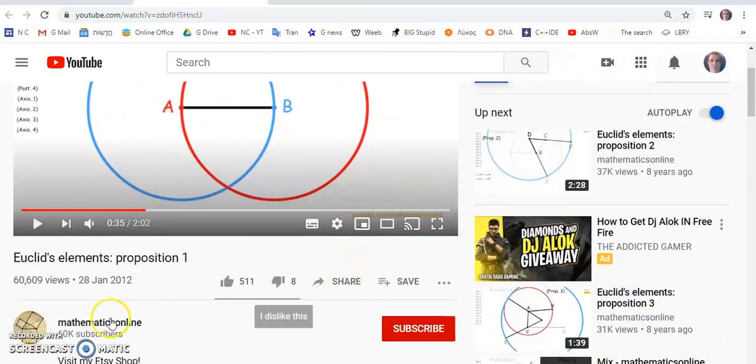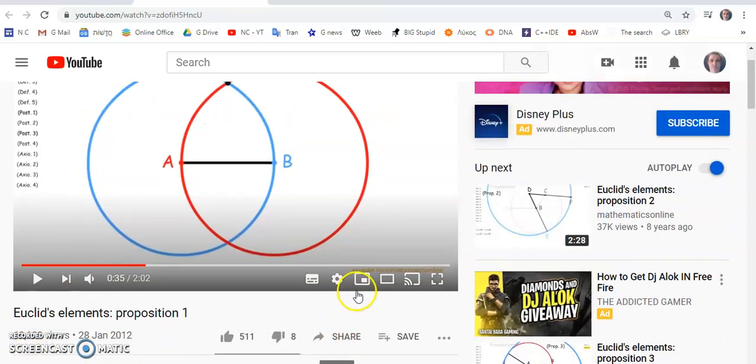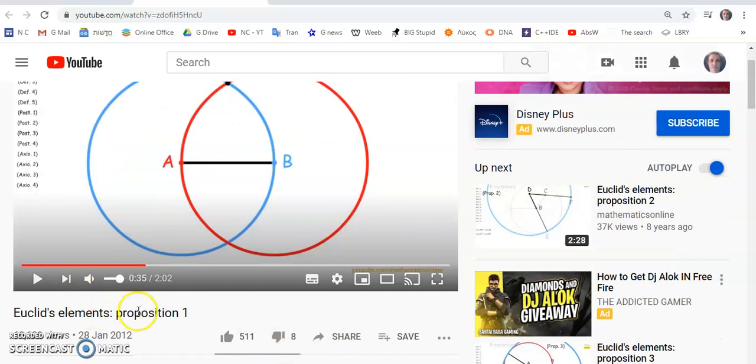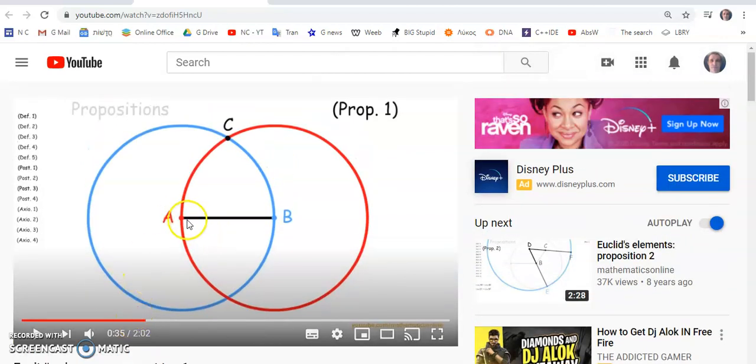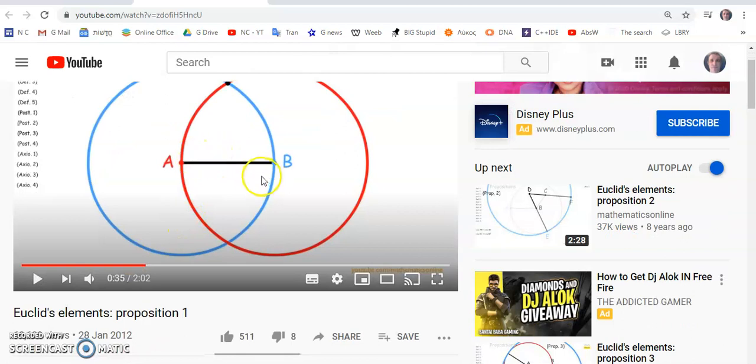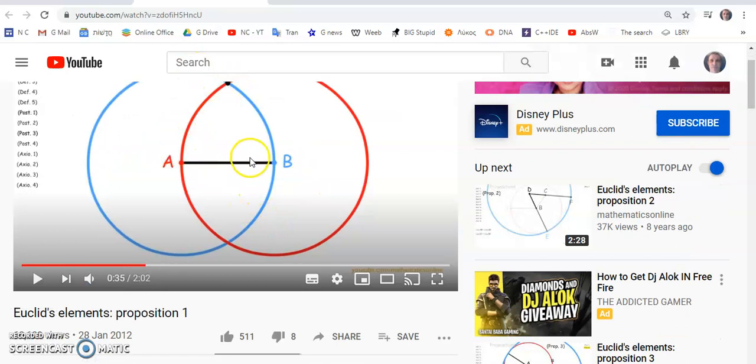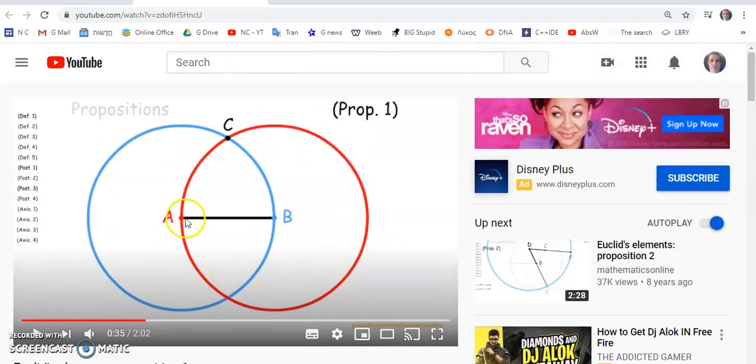In another video by Mathematics Online, we see what the attempted description of proposition 1 is. We hear that an attempt is made using a compass and a straightedge to produce an equilateral triangle. But what does that mean?